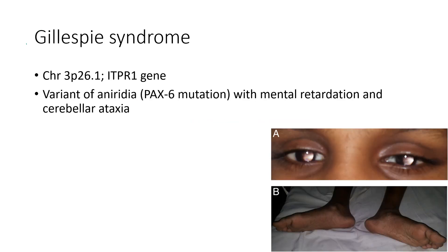Next is Gillespie syndrome. It is a variant of aniridia which occurs due to PAX6 mutation, with mental retardation and cerebellar ataxia. This picture shows a case of Gillespie syndrome — note the aniridia.